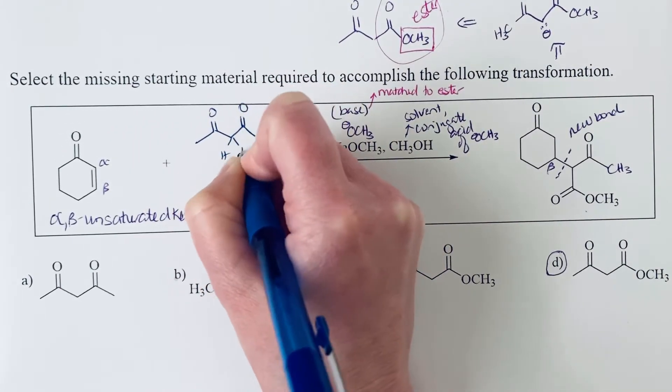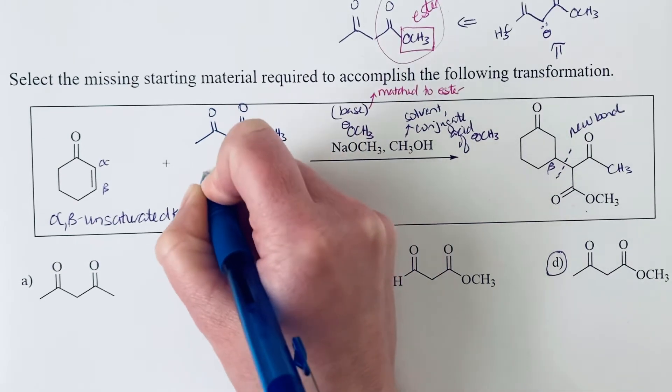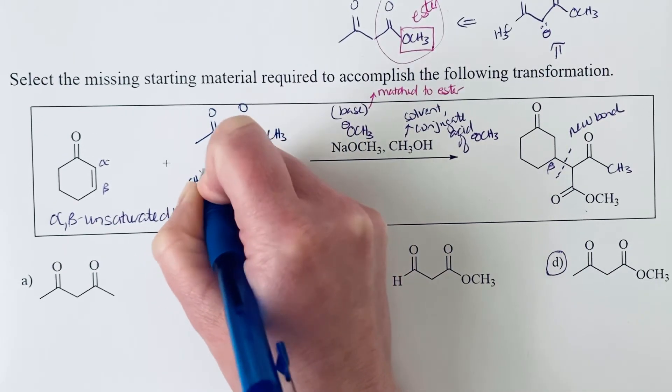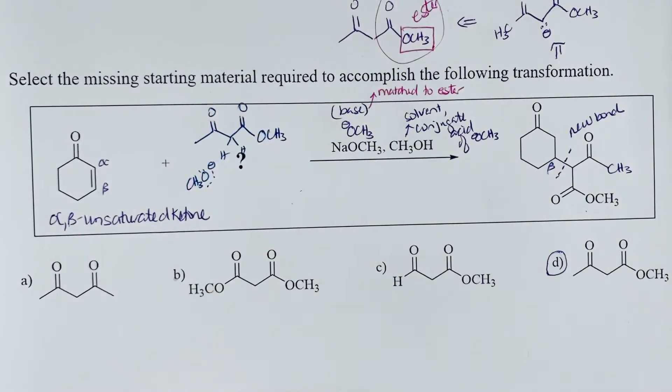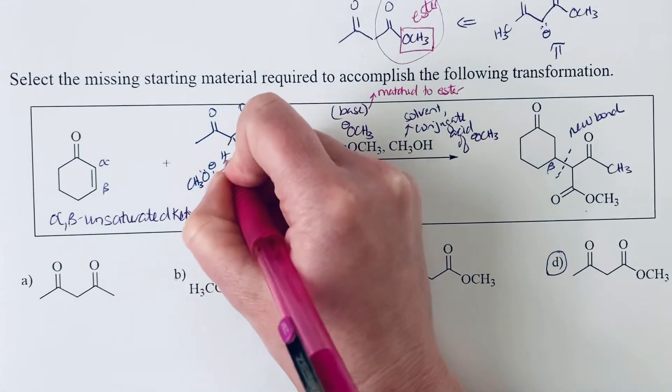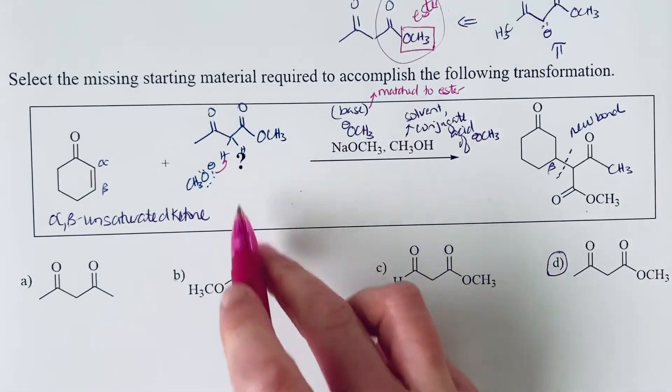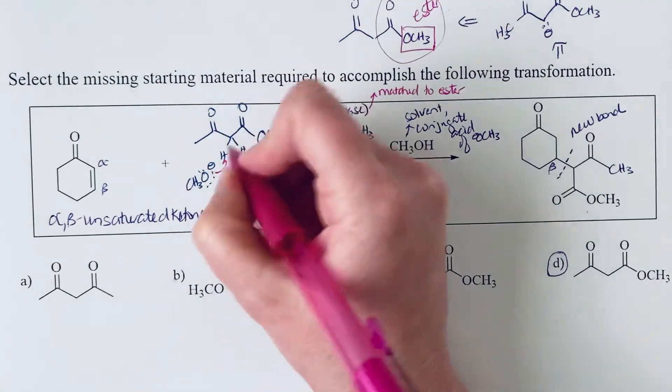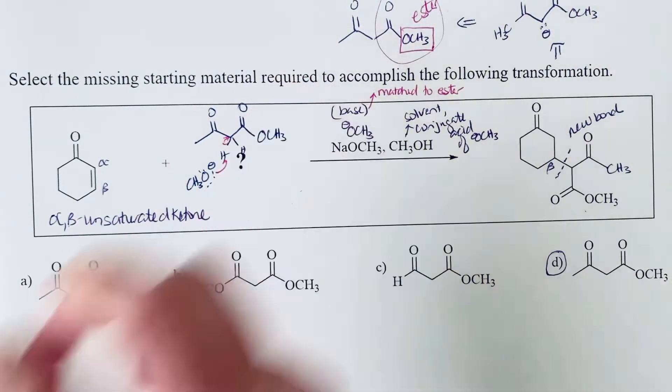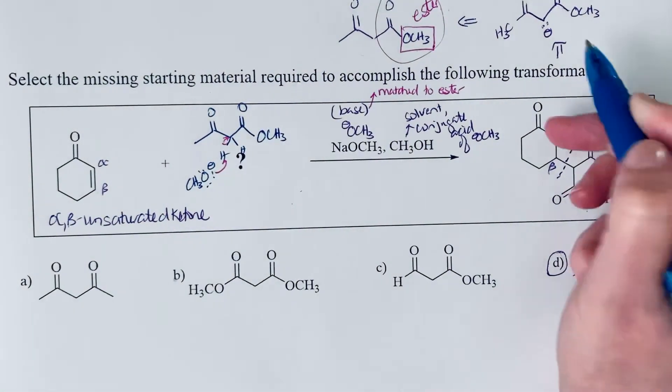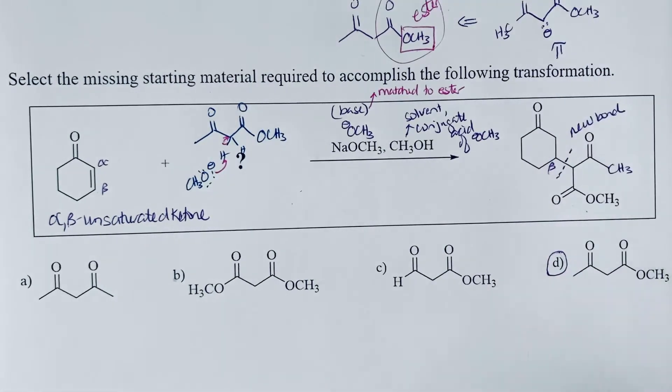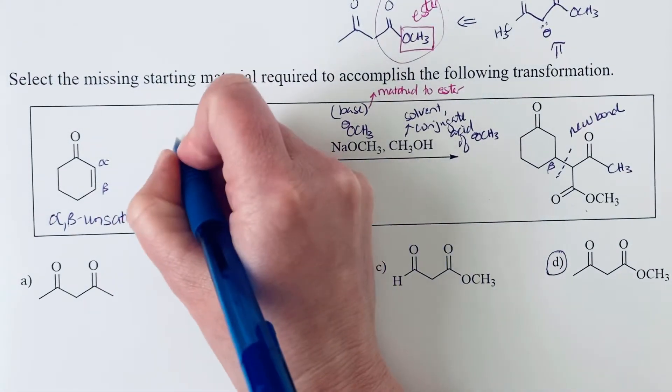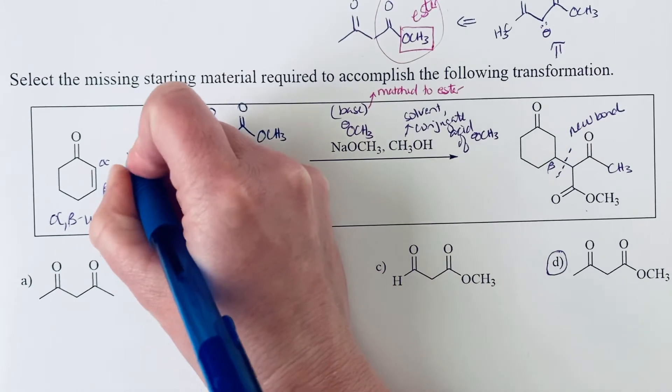So the first thing that's going to happen is your base, that OCH3- will react to deprotonate. And so the most acidic protons, of course, are the ones in between the carbonyl because you're going to have a lot of resonance stabilization. And so that is going to give you this enolate that we said we needed to add to that beta carbon. So that's going to form the enolate.